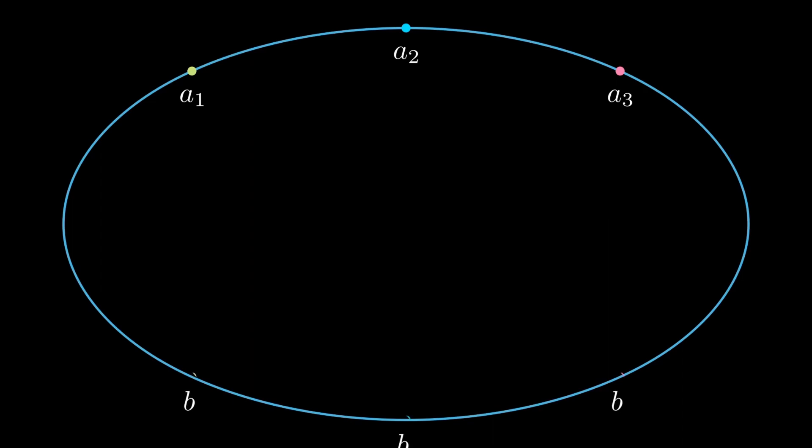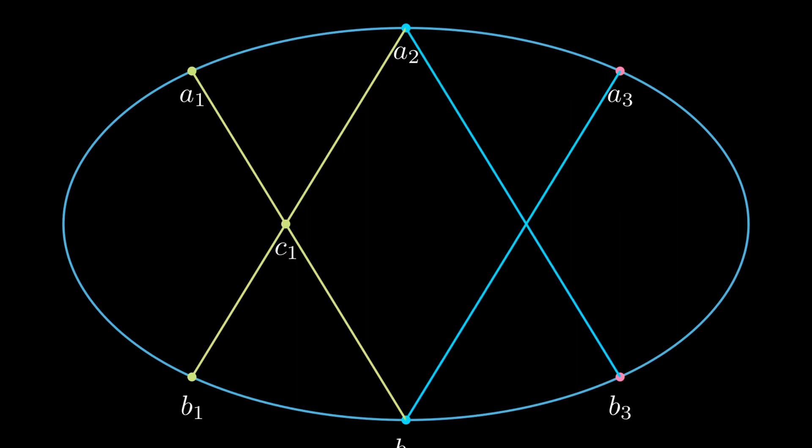And let's do the exact same thing. Let's join a1b2 and a2b1. Suppose again the intersection point is c1. Again, let's join a2b3 and a3b2. Once more, suppose the intersection point is c2. And finally, let's join a3b1 and a1b3. Suppose the intersection point is c3.